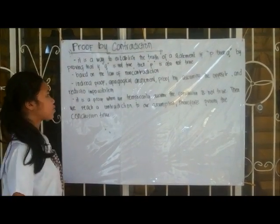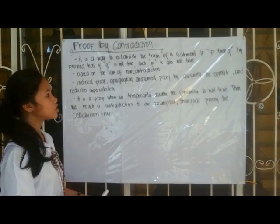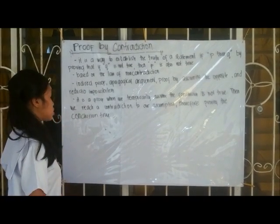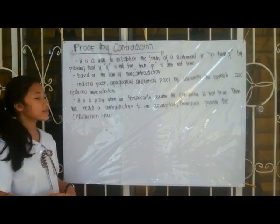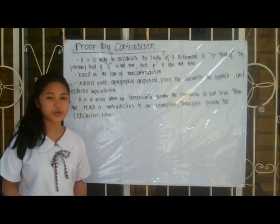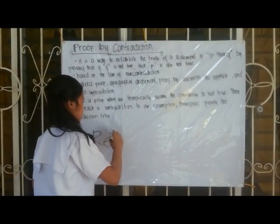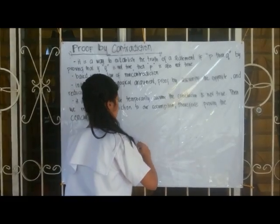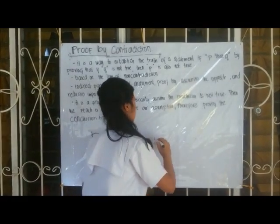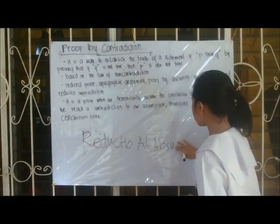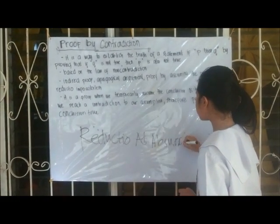It is a proof where we temporarily assume the conclusion is not true, then we reach a contradiction or impossible assumption, therefore proving the conclusion is true. It is a form of non-contradiction called reductio ad absurdum.